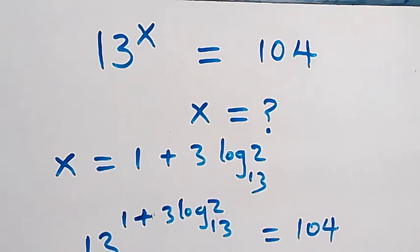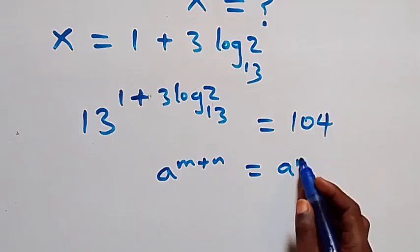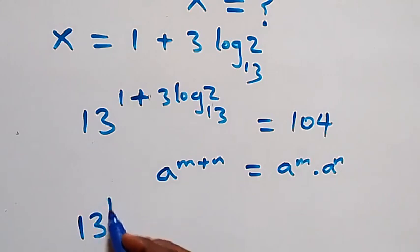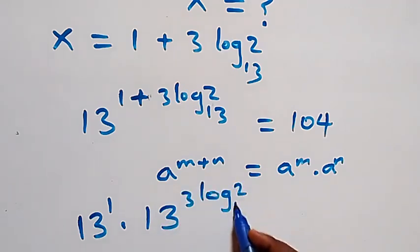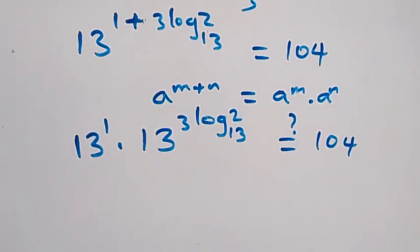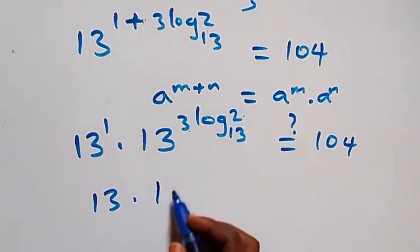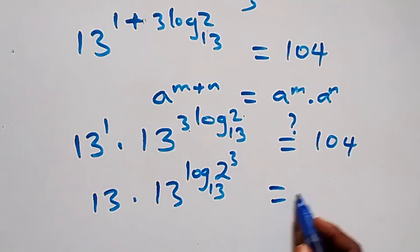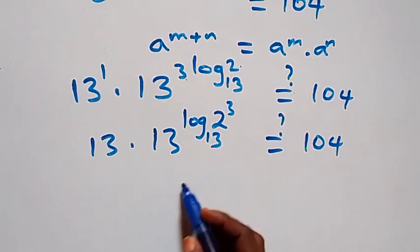Applying the law of indices — a raised to power (m plus n) equals a raised to power m times a raised to power n — this becomes 13 raised to power 1, times 13 raised to power (3 log 2 to base 13), equals to 104. Reversing the power law, 13 raised to power log(2 raised to power 3) to base 13 equals 104.